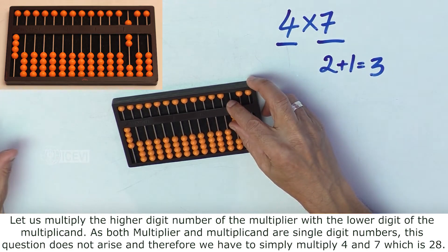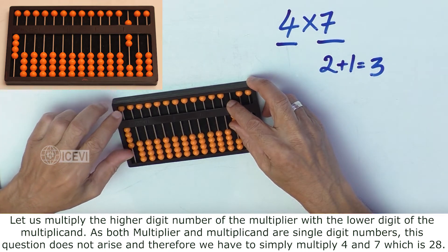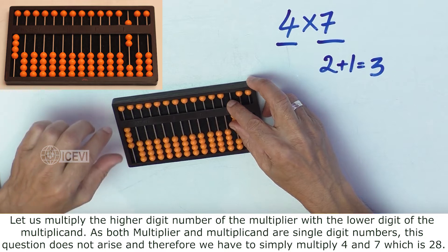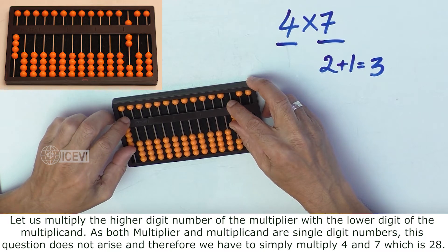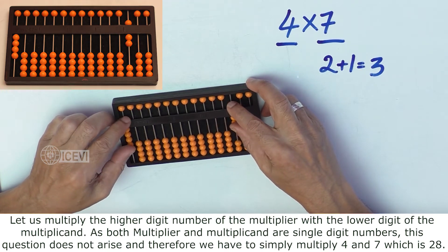Let us multiply the higher digit of the multiplier with the lower digit of the multiplicand. That is the general rule. As both the multiplier and the multiplicand are single-digit numbers, this question does not arise. And therefore, we have to simply multiply 4 and 7, which is 28.